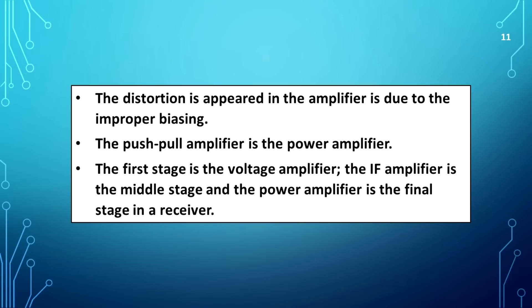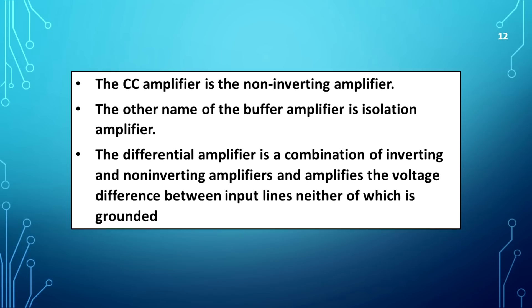The first stage is the voltage amplifier. The IF amplifier is the middle stage. The power amplifier is the final stage in a receiver. The CC amplifier is the non-inverting amplifier. The other name of the buffer amplifier is isolation amplifier. The differential amplifier is a combination of inverting and non-inverting amplifiers, amplifying the voltage difference between two input lines neither of which is grounded.